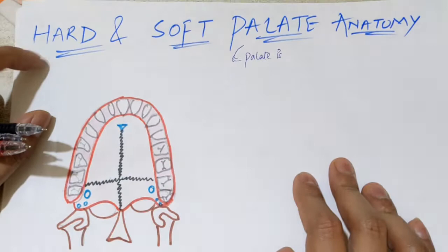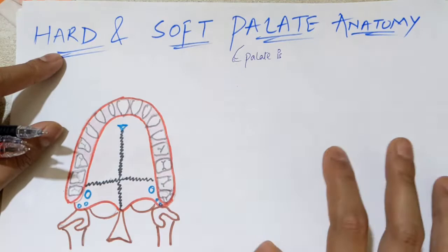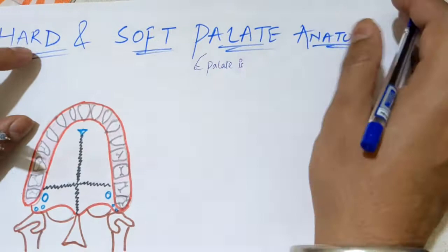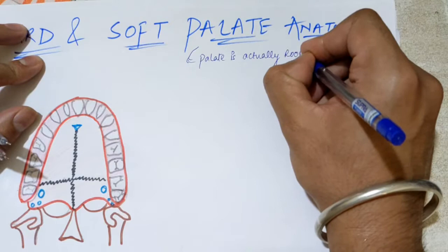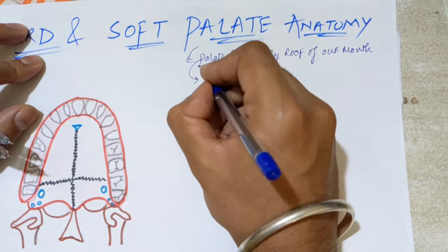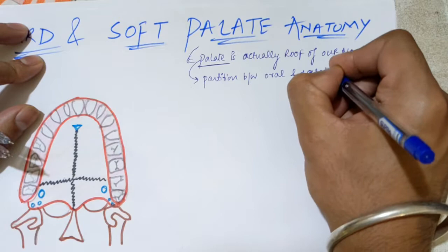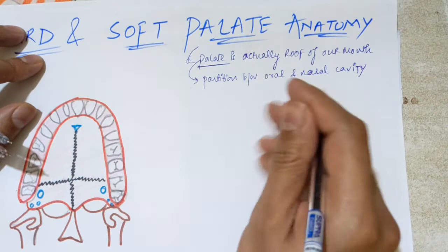Hello everyone, this is Suresh here. In this video we have to discuss the topic of our palate — the inner region of our oral cavity. We'll be discussing the anatomy of the hard and soft palate. The palate actually forms the roof of our mouth and also forms a partition between our oral and nasal cavity.